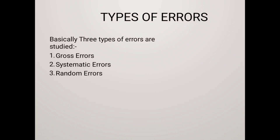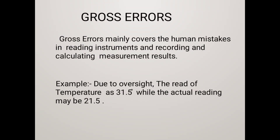The first one is Gross Error. Gross Error mainly occurs due to the carelessness or lack of experience of a human being. This covers human mistakes in readings, recordings, and calculating results. This error also occurs due to incorrect adjustment of instruments. These errors cannot be treated automatically and are also called personal errors.